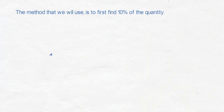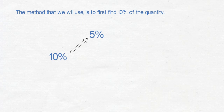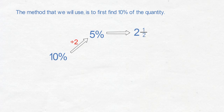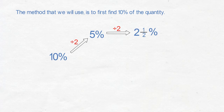The method we will use is to first find ten percent of the quantity. To find five percent, divide the quantity by two. To find two and a half percent, divide five percent by two. To find one percent, divide the ten percent by ten.